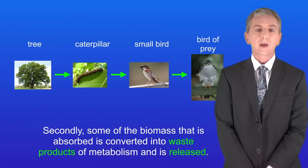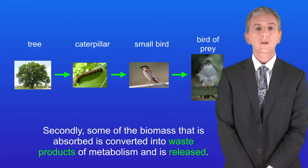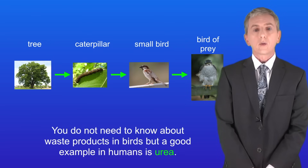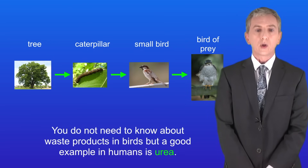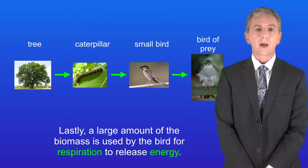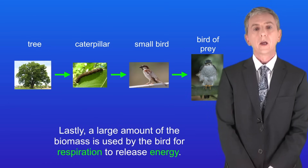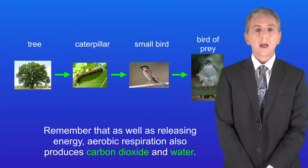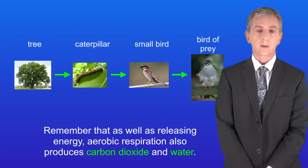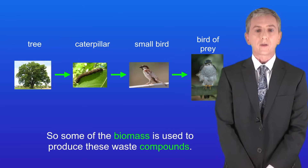Secondly, some of the biomass that is absorbed is converted into waste products of metabolism and released. You don't need to know about waste products in birds, but a good example in humans is urea. And lastly, a large amount of the biomass is used by the bird for respiration to release energy. As well as releasing energy, aerobic respiration also produces carbon dioxide and water, so some of the biomass is used to produce these waste compounds.